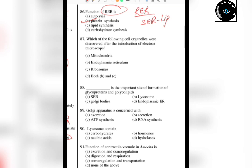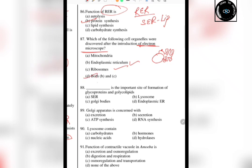The next question is: which cell organelles were discovered after the introduction of the electron microscope? After the nucleus structure was revealed, extensions of the ER were observed, and ribosomes were seen attached to the ER. So the answer is B and C — ER and ribosomes.